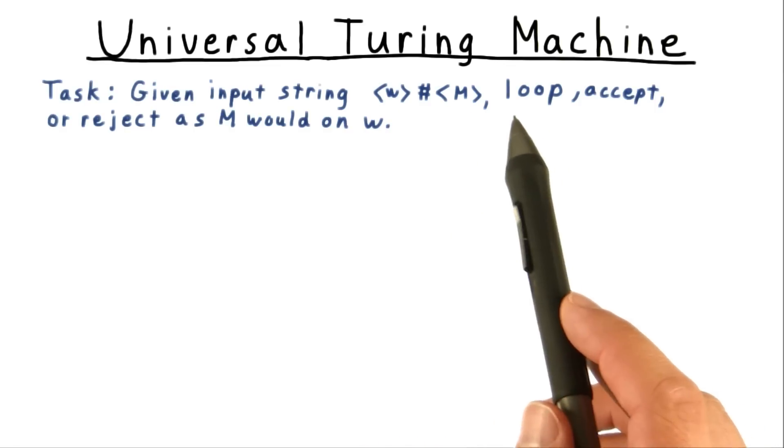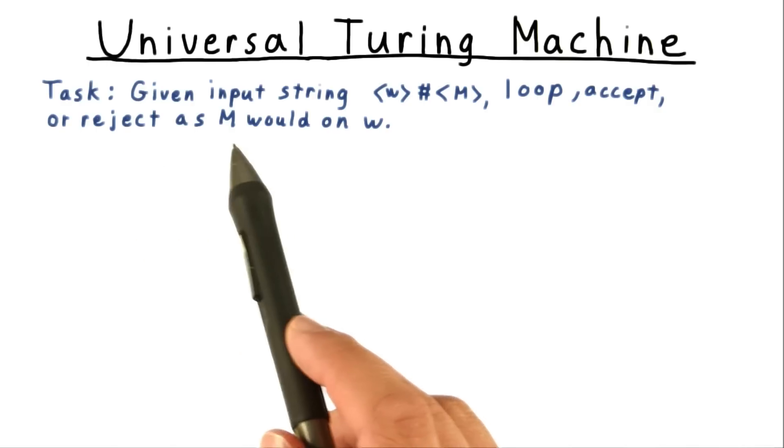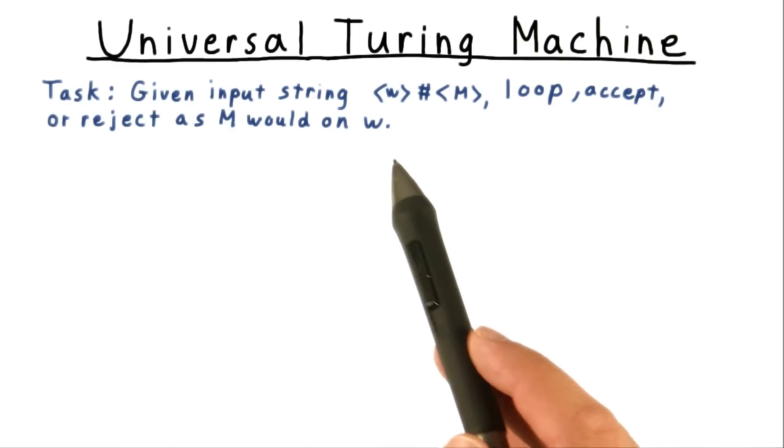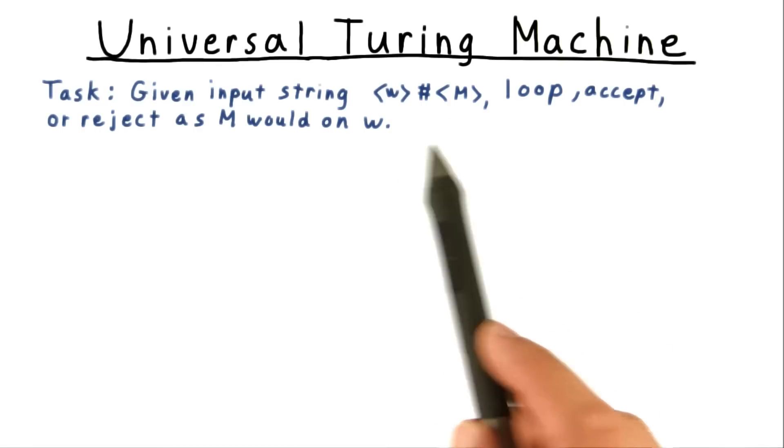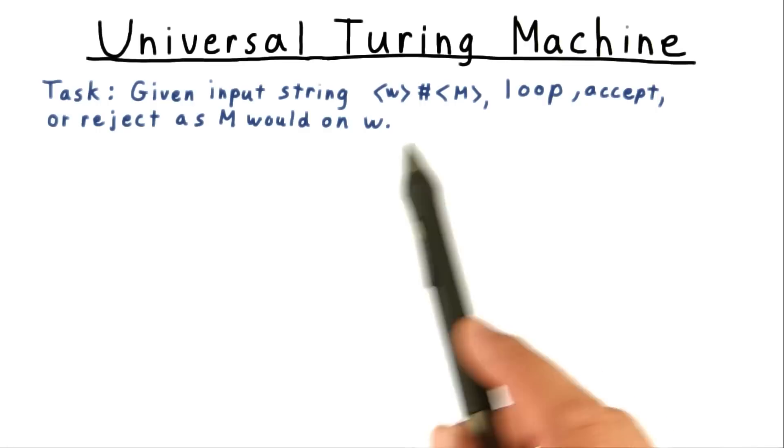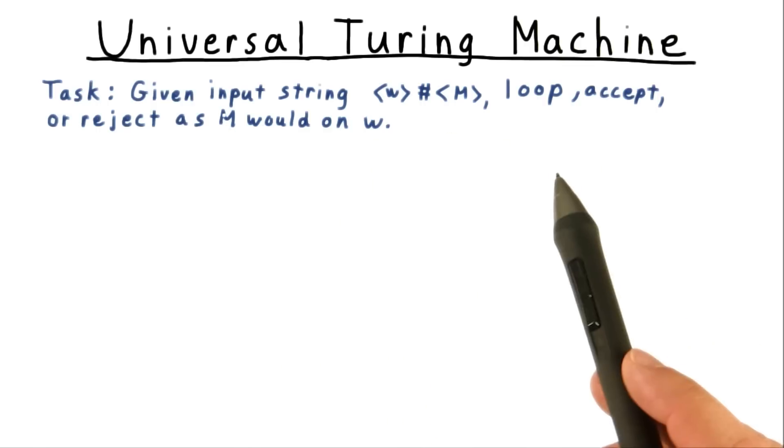The goal is to simulate M's execution when given the input w. That means we loop, accept, or reject just as M would on w. And if M does halt, we want the universal machine to output the encoding of the tape contents that M would have on w.